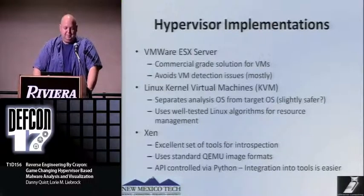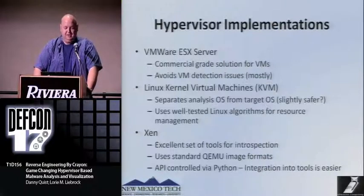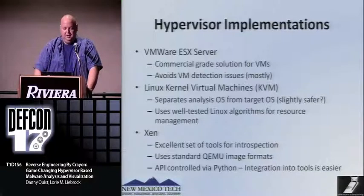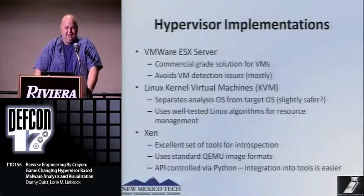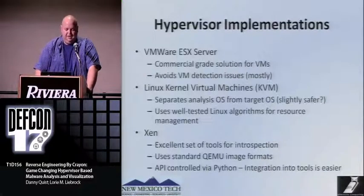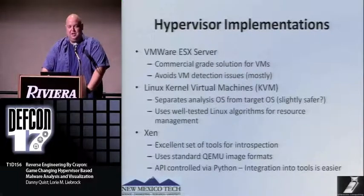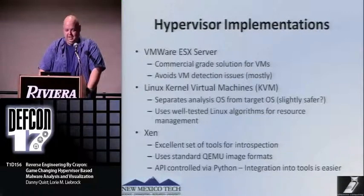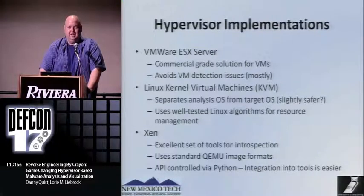There are a couple of hypervisor implementations. VMware ESX Server mostly avoids a lot of the VM detection issues. Linux Kernel Virtual Machines is what I use as my base environment when reverse engineering, just to prevent running malware on my base system. And Xen — Xen is really nice because it's got an excellent set of introspection tools, largely led by Georgia Tech. What's nice about Xen is it uses a standard QEMU image format, and its API is fully controlled via Python, so you can integrate it into tools. Yay, Python.